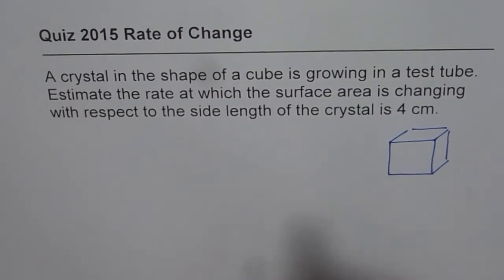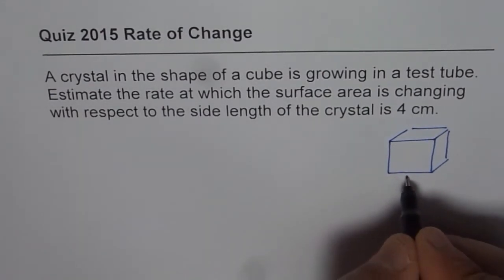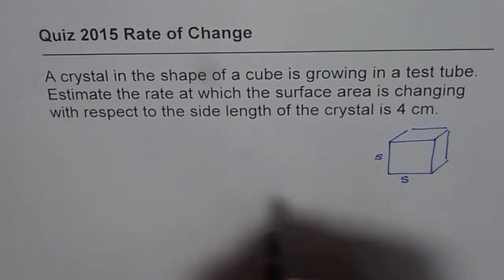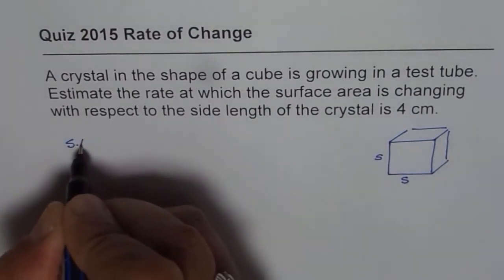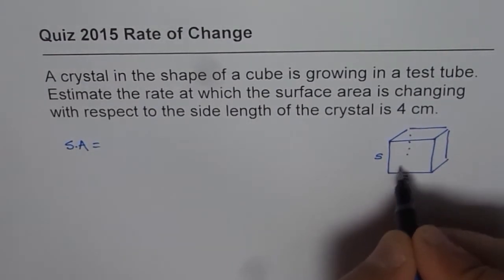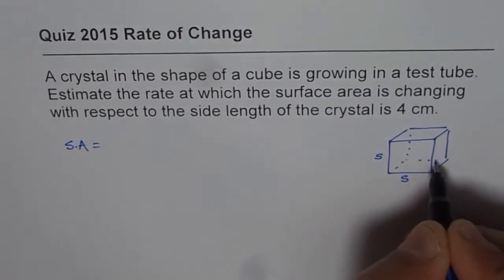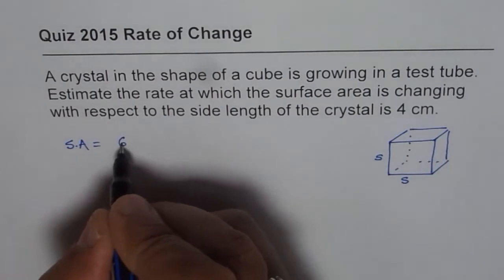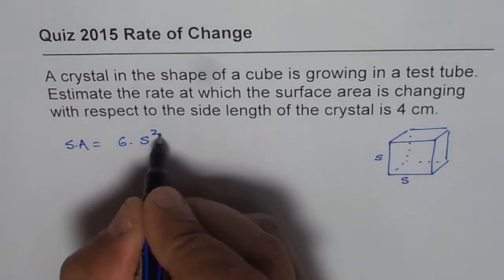So as you can see for a cube, if S is the side for the cube, then surface area is how much? There are 6 surfaces like this, correct? There are 6 surfaces and therefore the surface area is 6 times S square.